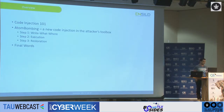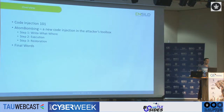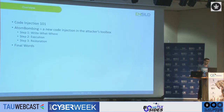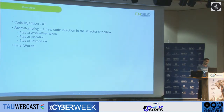What we're going to be doing today is we're going to briefly review code injection — what code injection is. We're going to take atom bombing and break it into three main steps. The first one is write-what-where, which is the ability to write whatever we want into wherever we want in the target process's address space. Then we'll move on to execution, which is being able to execute code within the context of our target process. And we'll finish with restoration, which is cleaning up our footprints and making sure we leave no incriminating evidence.